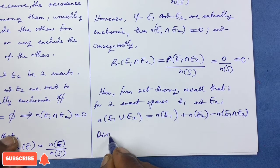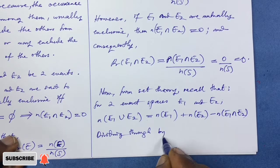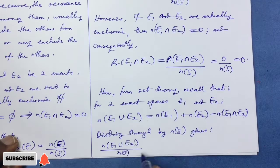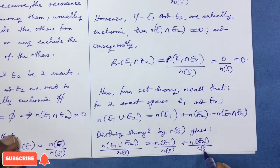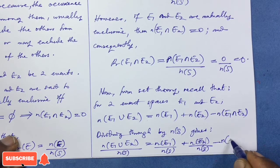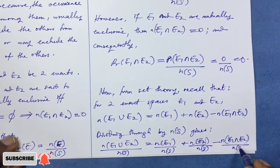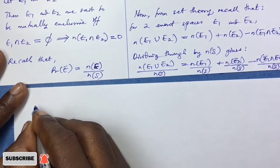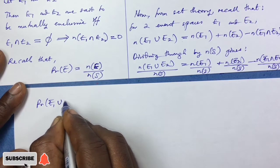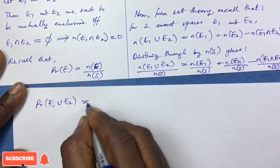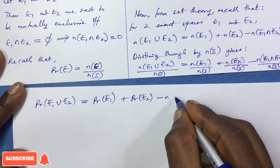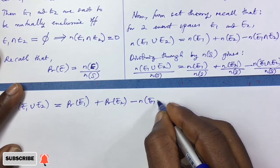Dividing through by n(S), the cardinality of the sample space, now defines the respective probabilities. This implies: P(E1 ∪ E2) = P(E1) + P(E2) − P(E1 ∩ E2). The first ratio defines P(E1 ∪ E2), the second defines P(E1), the third defines P(E2), and the last defines P(E1 ∩ E2).